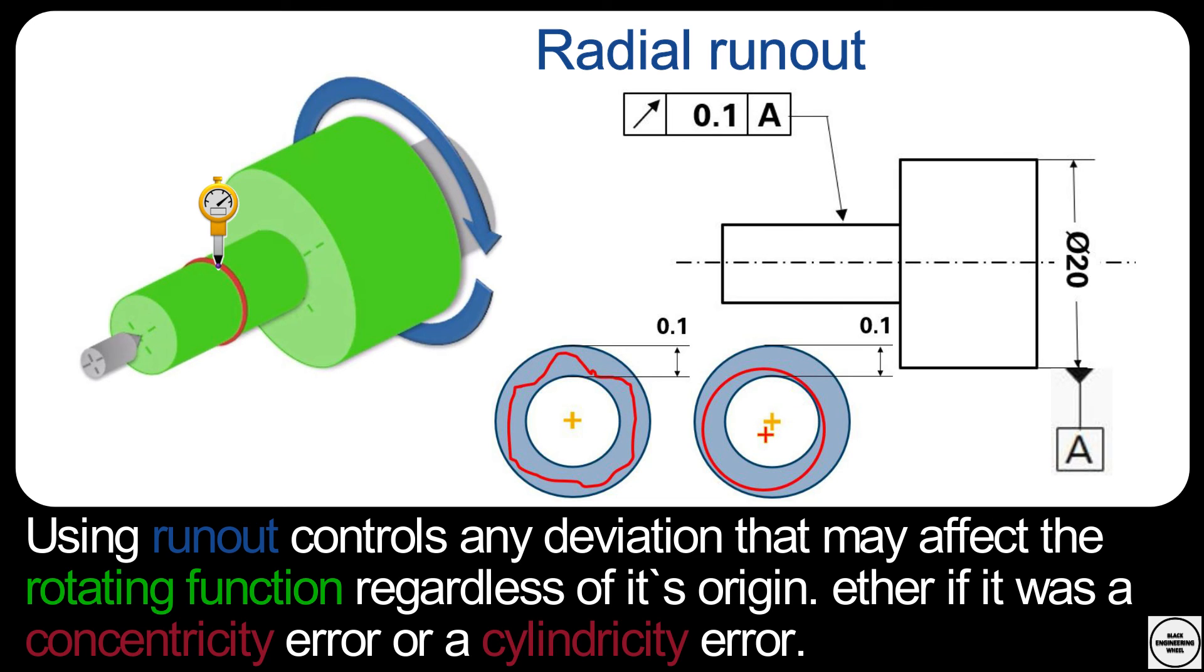This is similar to the difference between circularity and cylindricity. Using circularity or circular runout, you still measure in different cross sections, but the result of each cross section is evaluated independently from the other cross sections.